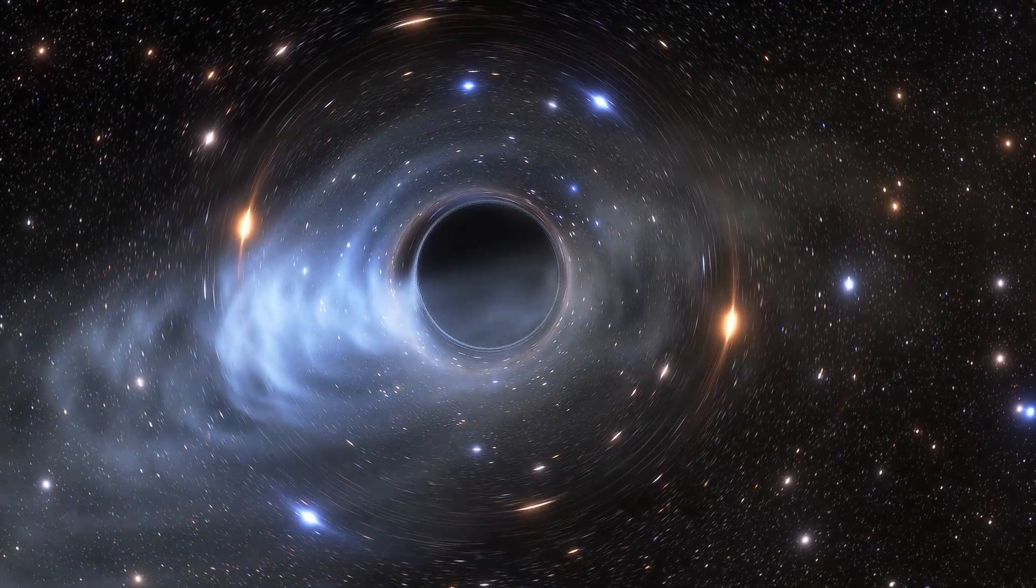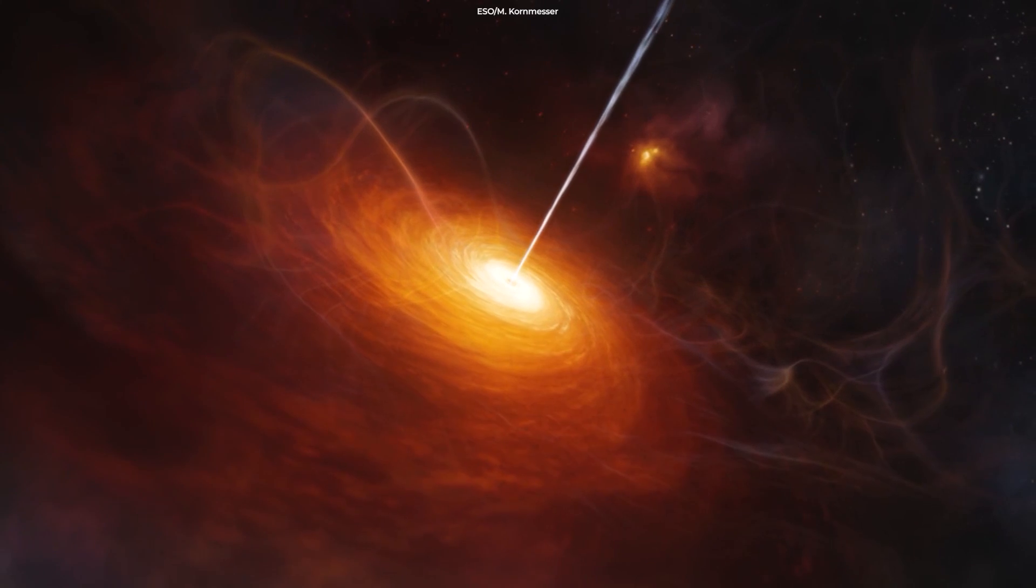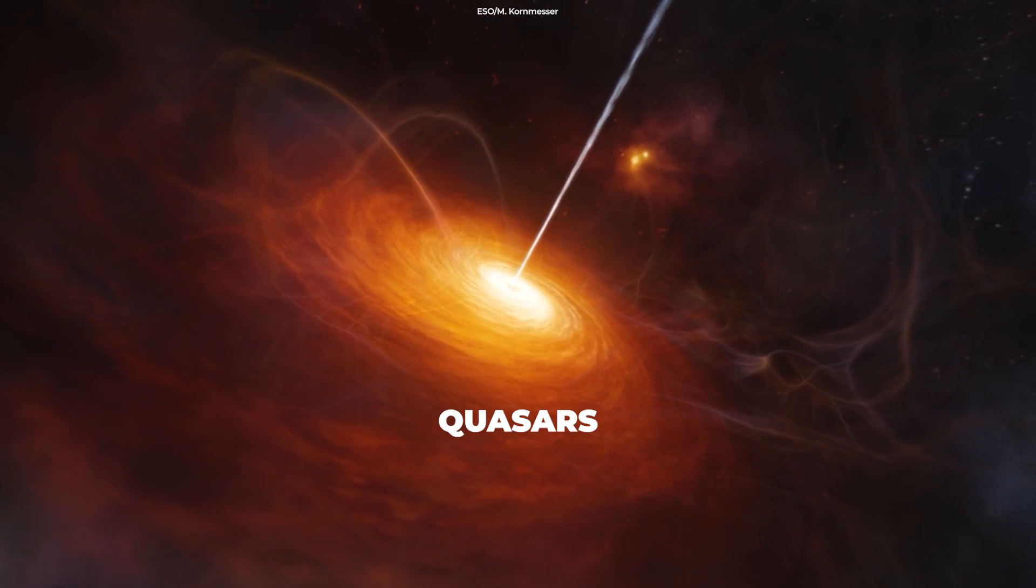Most of the time, they're inactive, but when they are active and eat stars and gas, the region close to the black hole can outshine the entire galaxy that hosts them. Galaxies where the black holes are active are called quasars.